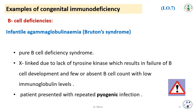Examples of congenital immunodeficiency include B cell deficiency — infantile agammaglobulinemia, known as Bruton's syndrome — a pure B cell deficiency syndrome. It is X-linked and due to lack of tyrosine kinase, which results in failure of B cell development with few or absent B cells and low immunoglobulin levels. Patients present with repeated pyogenic infections.